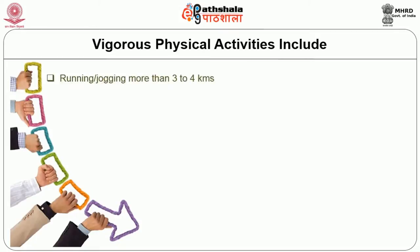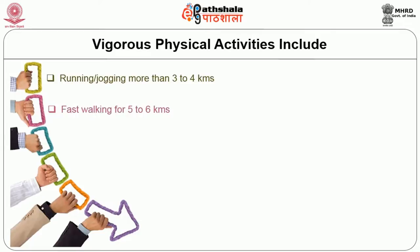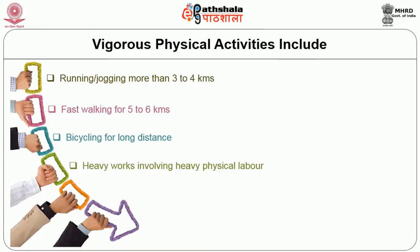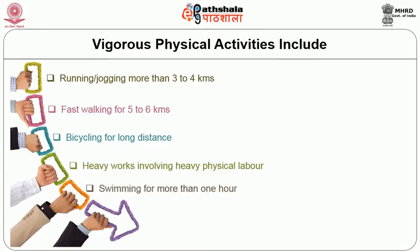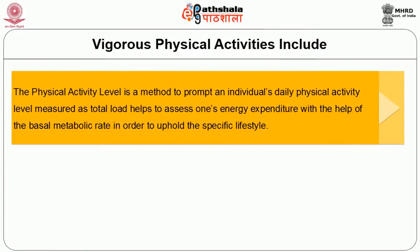Vigorous physical activities include running or jogging more than 3 to 4 kilometres, fast walking for 5 to 6 kilometres, bicycling for long distances, heavy physical labour, swimming for more than an hour, doing aerobics, or playing competitive sports for a certain duration.